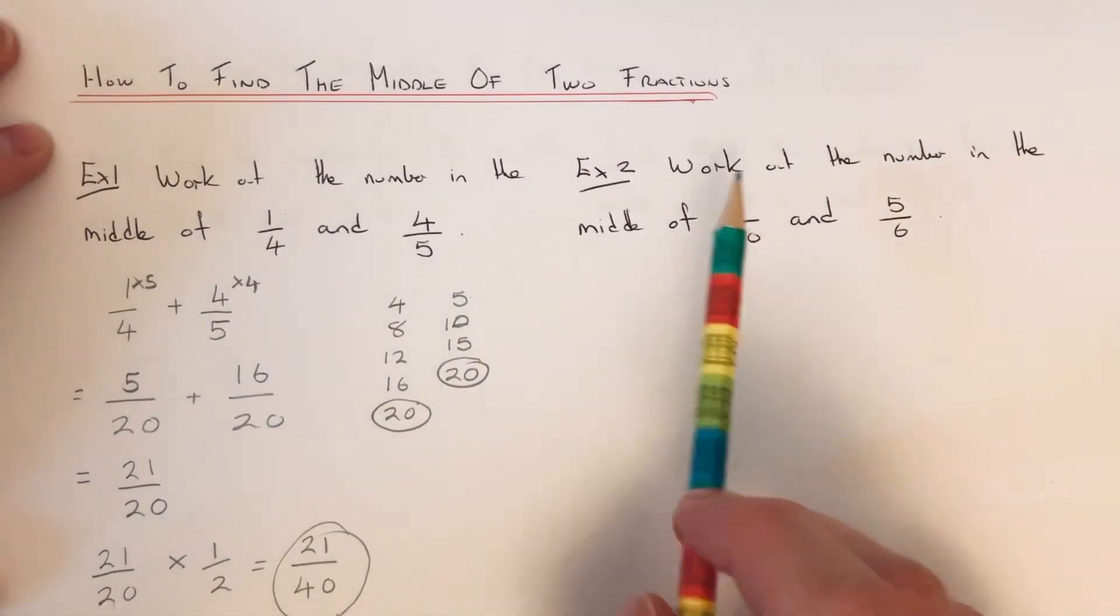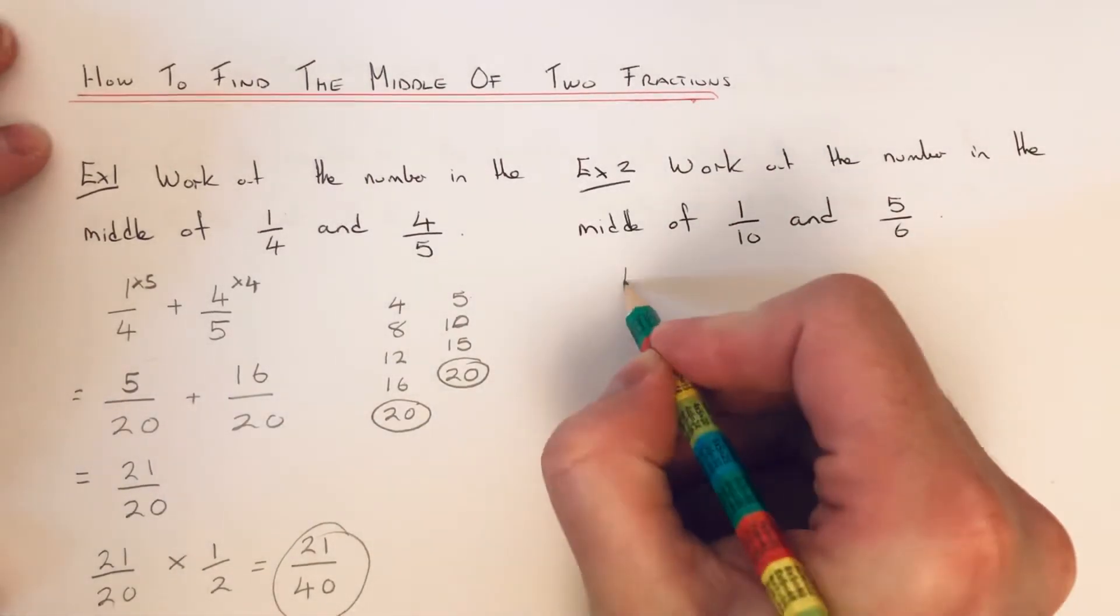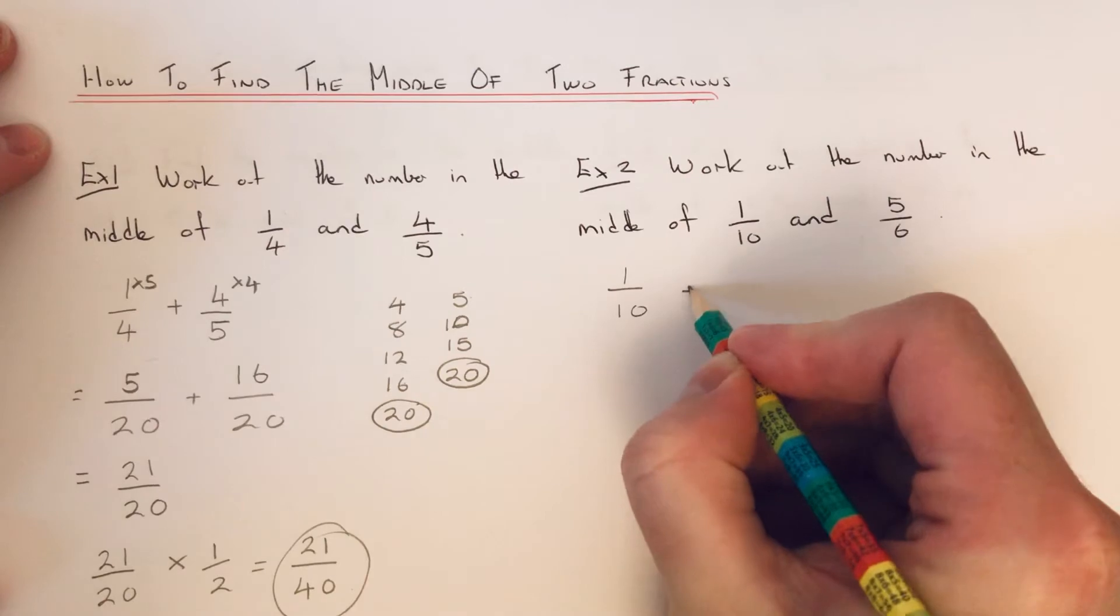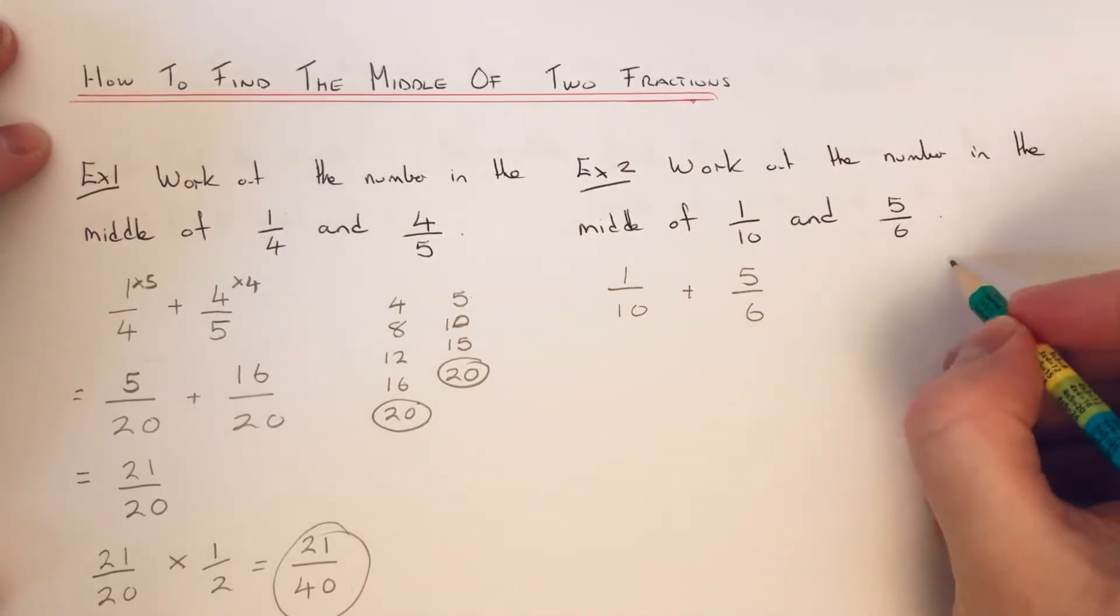So let's do one more example. We've got to work out the number in the middle of one tenth and five sixths. So again, we just need to add the fractions together. Let's make a common denominator.